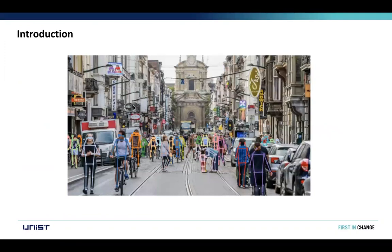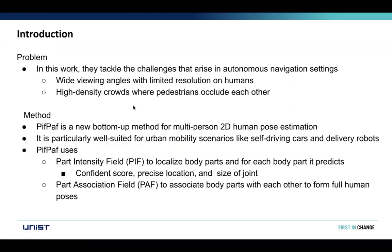Here is a result of an image that has been inputted to the PifPaf algorithm, and it detects human poses from that image. There has been much work on pose estimation, and most of these methods usually work with high resolution images. In this work, they tackle the challenge that arises in autonomous navigation settings: images with wide viewing angles, limited resolution on humans, and additionally high-density crowds where pedestrians occlude each other.